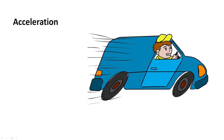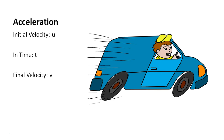So what is basically acceleration? Suppose before any moment the initial velocity is u, and after time t the velocity is v. For example, the initial velocity is 30 meters per second, and within one second the velocity changes from 30 to 50 meters per second.